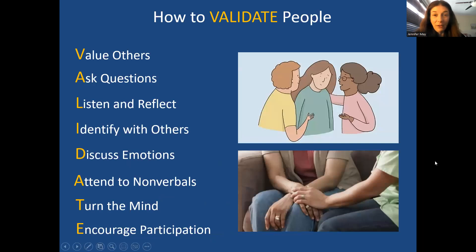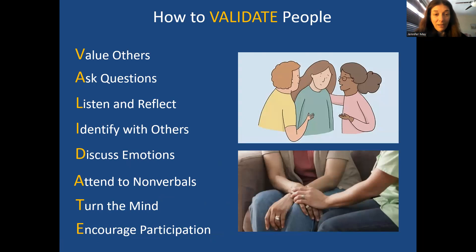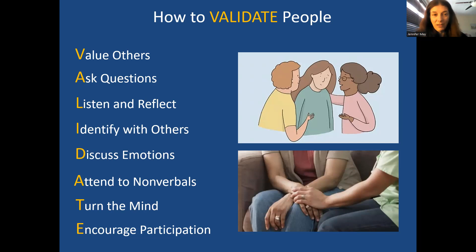So putting it all together — how to validate people: value others, showing on a deep human level that we appreciate them as human beings; ask questions to draw out their experience and better understand; listen with your body language and by reflecting back what they're saying; identify with others by really putting yourself in their shoes and deeply understanding their situation from their standpoint; discuss emotions to show how their emotions make sense; attend to non-verbals — it's not just what they say, it's how they're presenting. And if it's challenging, turn your mind back to validation so you're not judging, and encourage participation so you don't disconnect.